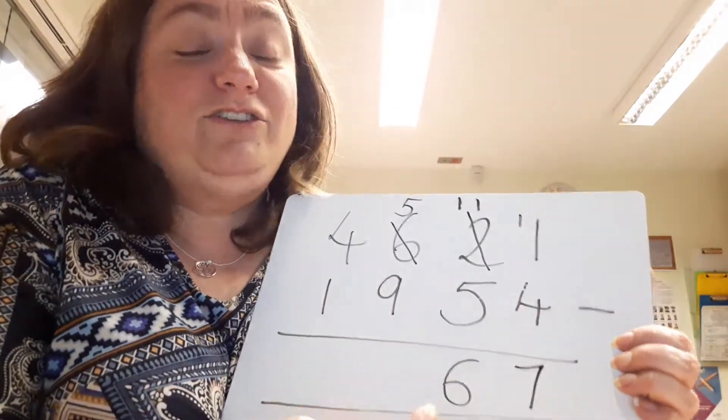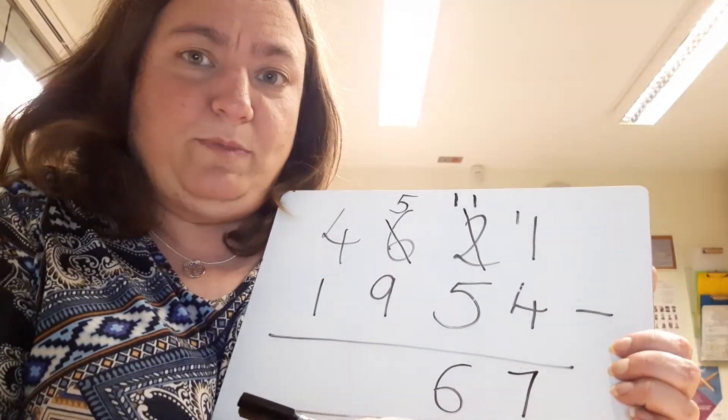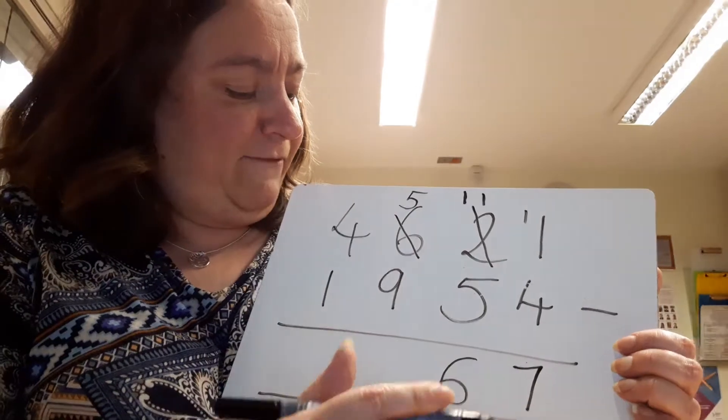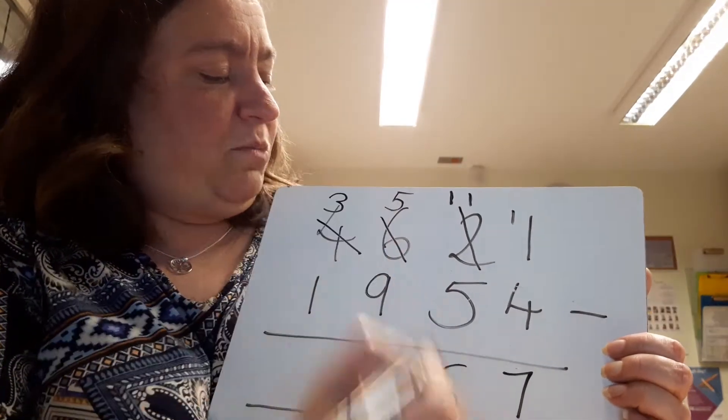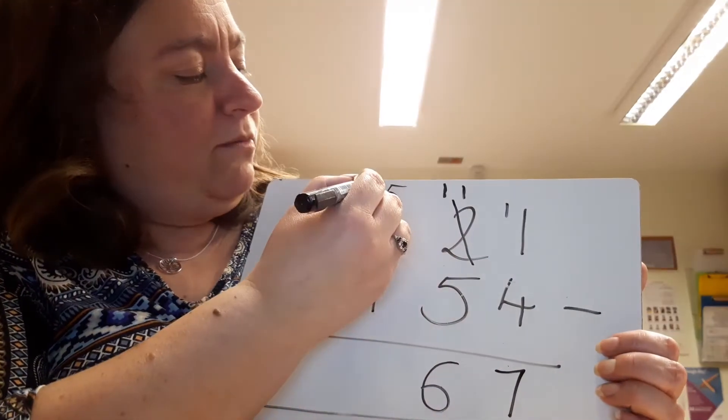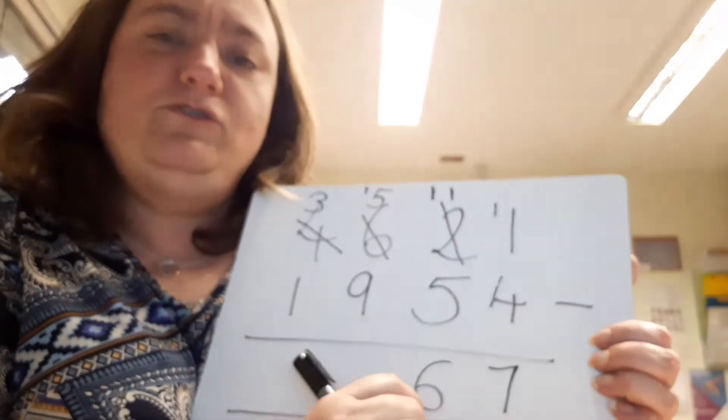Oh, five take away nine—again I don't have enough, so I'm going to need to ask the next column along, do a bit of borrowing. I'm going to ask my 4,000. He can become a 3, he doesn't have a problem with that, and then I can put my 1,000 over there. So actually this is 1,500, or 15 hundreds.